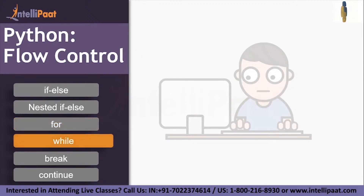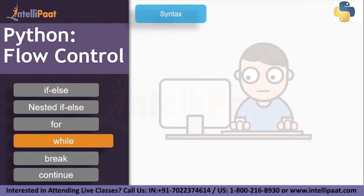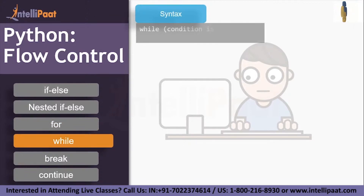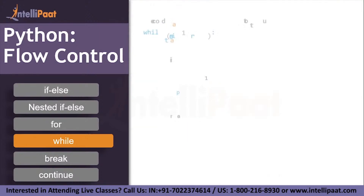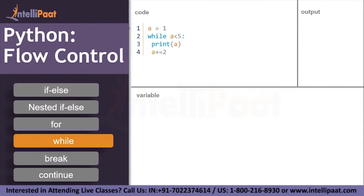Next is the while loop. The syntax is: 'while condition is true: execute set of statements.' Start, check for the condition — if it is true, execute block one, and then repeat the loop until the condition becomes false. If the condition is false, exit the loop.